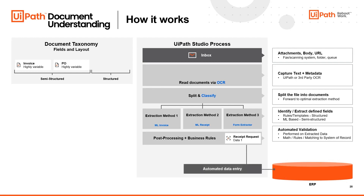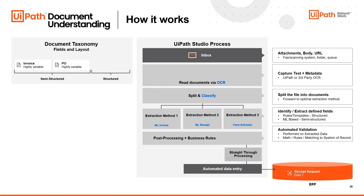If everything checks out in those post-processing and business rules and the system determines the data is good to go, we can perform automated data entry. This process of not touching the document from its inbox first touchpoint to where that data will reside is called straight-through processing. One of the key metrics we look at for a successful system is what is the straight-through processing rate.